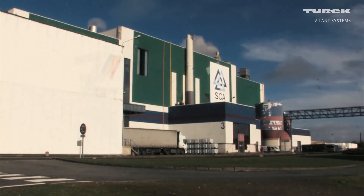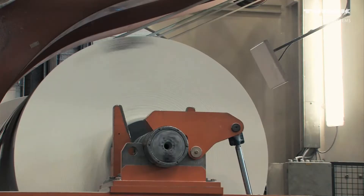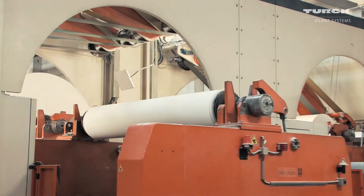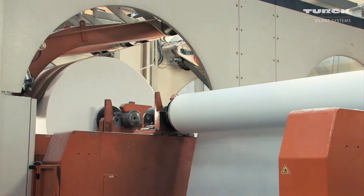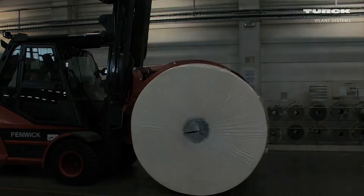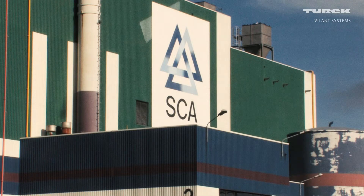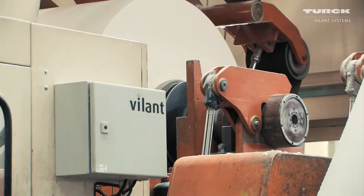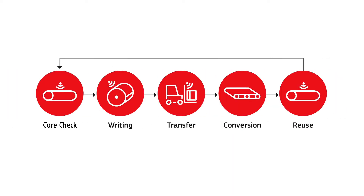Here at SCA's factory in Lutte, France, RFID is used through the entire supply chain. A fully automated RFID-based intralogistics traceability is built on top of the manufacturing execution and SAP warehouse management systems. This is the world's most integrated RFID-based intralogistics system in the paper industry. Here is an overview of the processes automated with RFID.